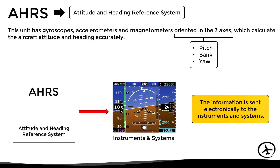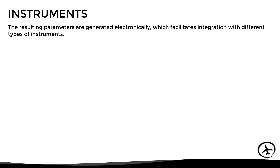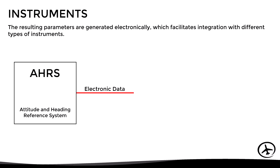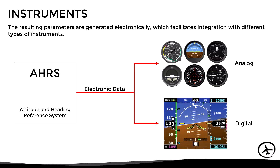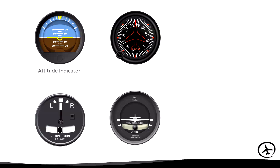Since the resulting parameters are generated electronically, they are easily integrated with different types of instruments. The electronic data generated by the unit can be used to feed analog instruments adapted to receive electronic inputs, or sent to electronic flight instrument systems with digital presentations. The instruments normally fed by the AHRS are the attitude indicator, the heading indicator, the turn and slip indicator, and the turn coordinator. Apart from this, the system can also feed instruments that previously used a remote indicating compass, such as the HSI or the RMI.